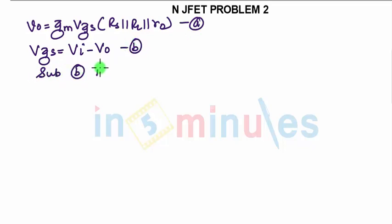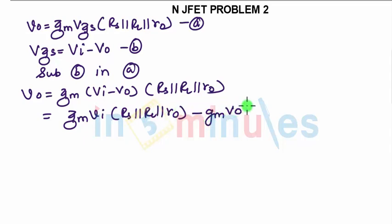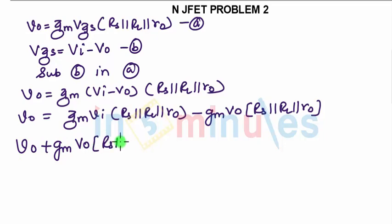Substituting B in A, you will get VO equals GM*(VI minus VO)*(RS parallel RL parallel RO). After opening the bracket, you will have GM*VI*(RS parallel RL parallel RO) minus GM*VO*(RS parallel RL parallel RO).